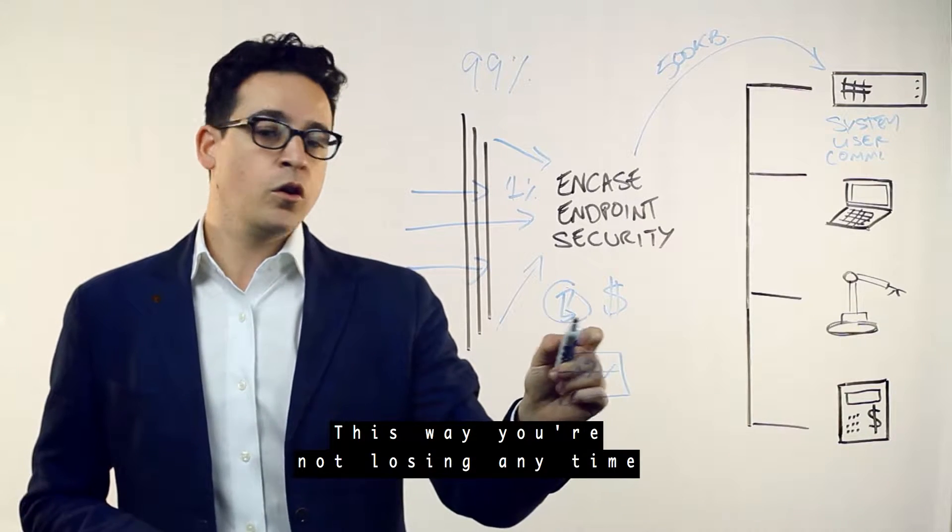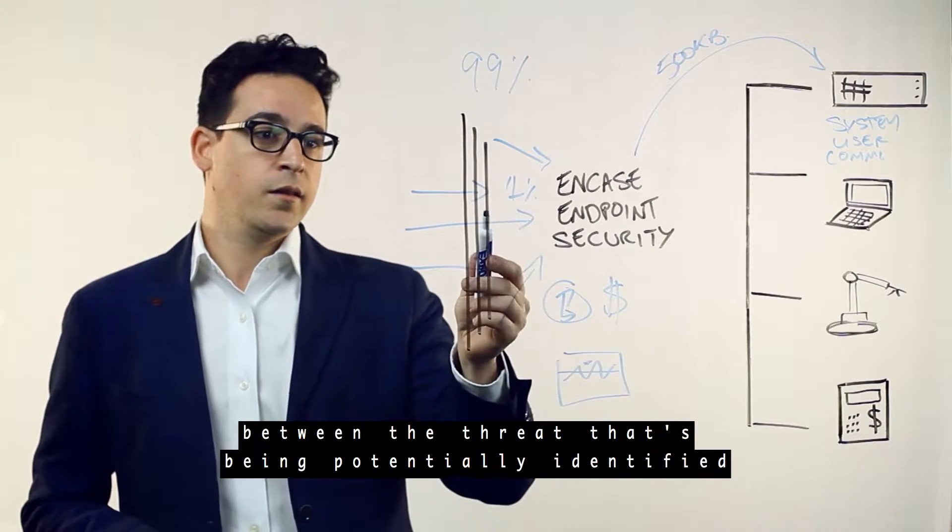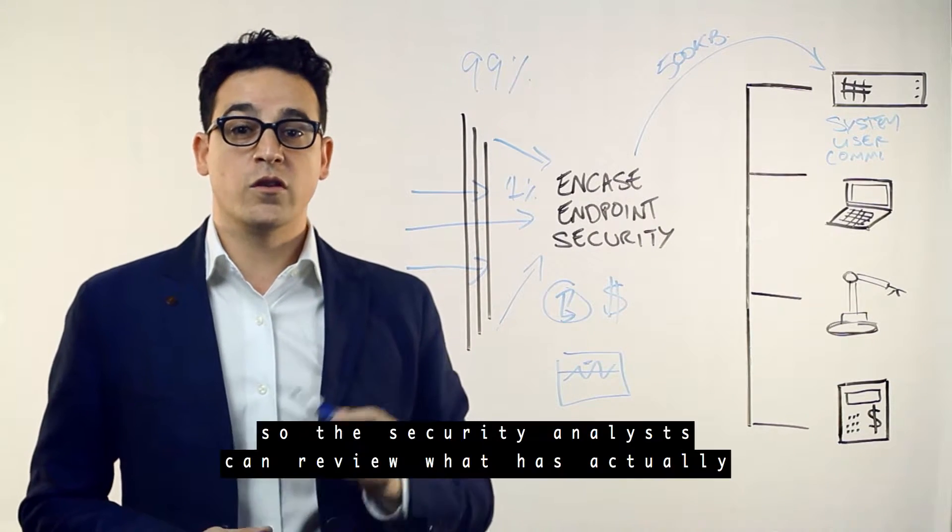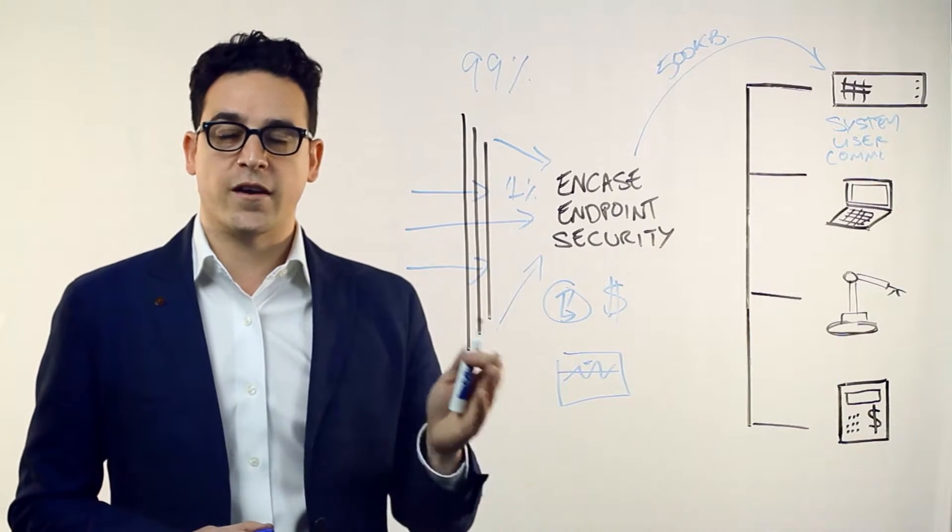That feed allows NCASE endpoint security to reach out to that endpoint at the same time of the alert. This way, you're not losing any time between the threat that's been potentially identified and the system activity that's pulled so the security analyst can review what has actually happened.